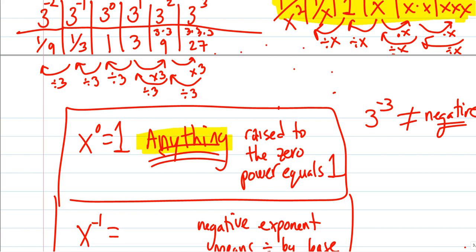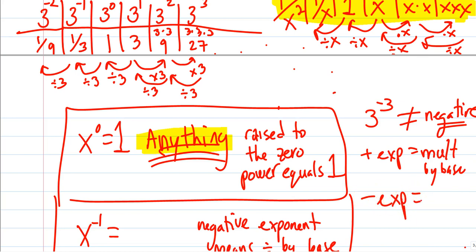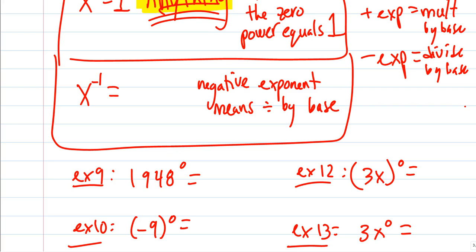What about 3 to the negative third? Do not make that negative 9 — that's not what an exponent means. A positive exponent means multiply by the base, so a negative exponent means the opposite: instead of multiplying by the base, we are dividing by the base.